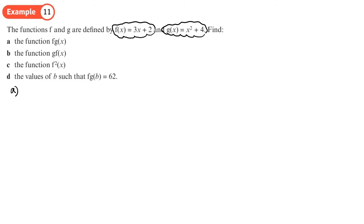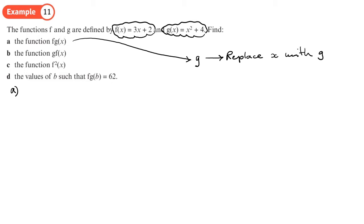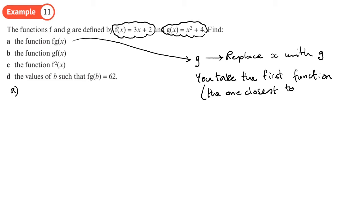This time we're not putting numbers in — we actually need to find algebraically what the functions are. So if you put g into f, you take the first function g and put it into the second function. Basically what you do is replace x with what g is. In general, you take the first function — the one closest to x — and substitute it into the second function, then simplify.